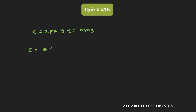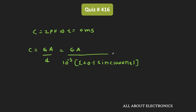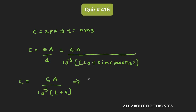We know that C equals εA/D, and here D(t) equals 10⁻³ times (1 + 0.1 times sin(1000πt)). If we put t equal to 0, then sin(0) equals 0, so D(0) equals 10⁻³. That means C equals εA divided by 10⁻³, giving εA equals 10⁻³ times 2pF, which equals 2 times 10⁻¹⁵ F·m.